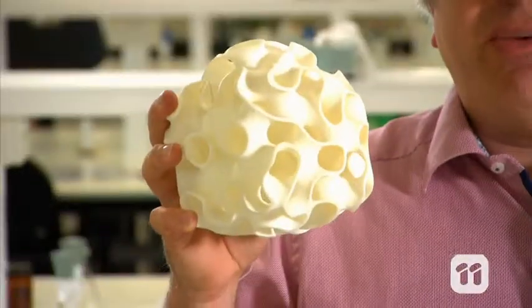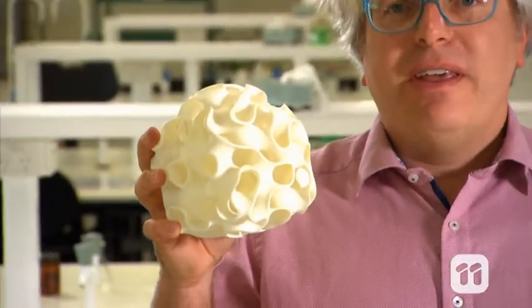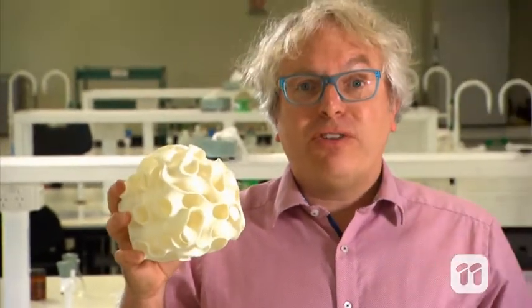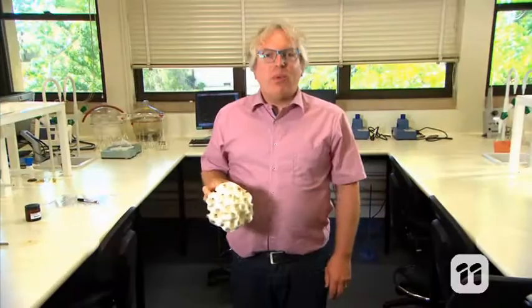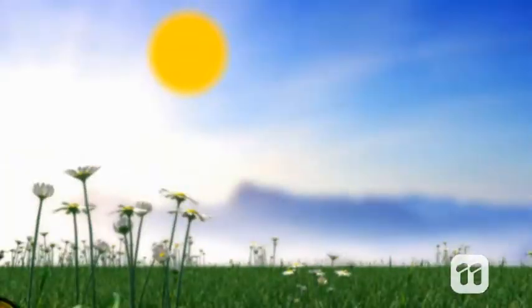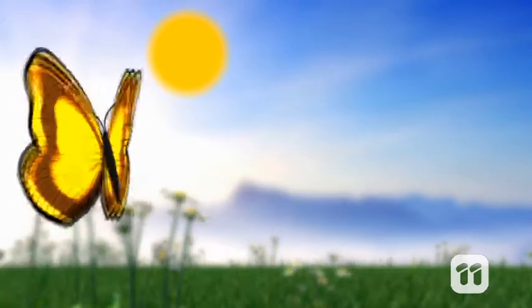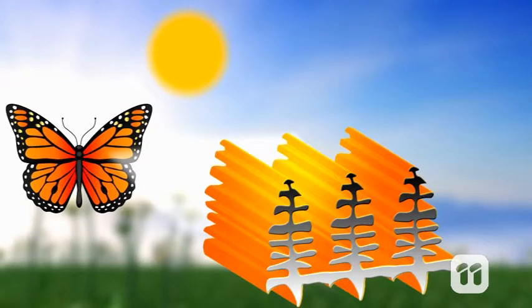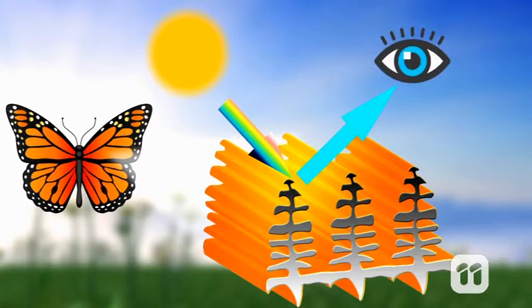So now that we know how their wings are structured, how do the butterflies use this structure to create color? Well, butterflies use a whole range of different mechanisms. Most butterflies produce color through pigments in their wing scales. Pigments are molecules that absorb some frequencies of light. When this happens, the frequencies that are left produce the colors we see.